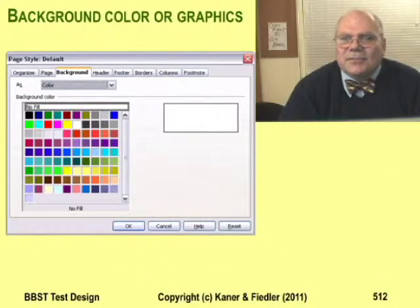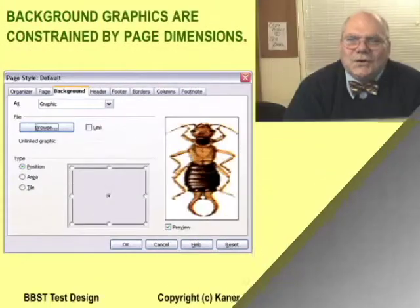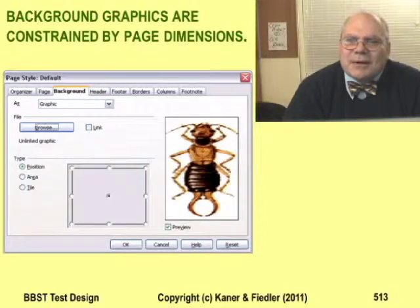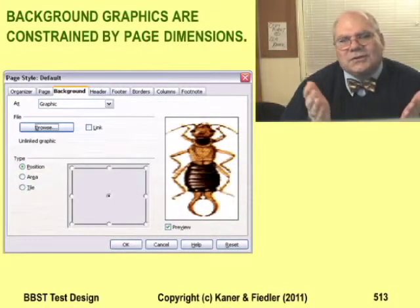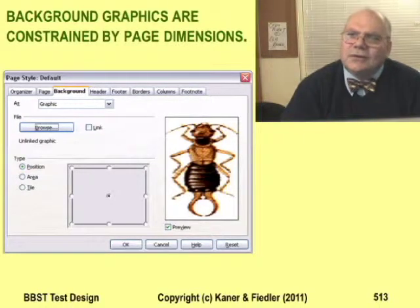The next tab on the page style dialog is page color. I'm not sure how this interacts with the other variables, so let's skip it. You can place a background graphic on every page and specify its size and position. Of course, the page size will constrain the graphic size and maybe its position. Should the margins constrain its position too?